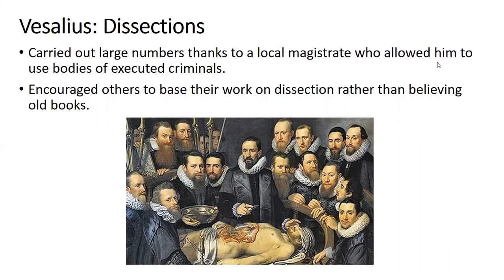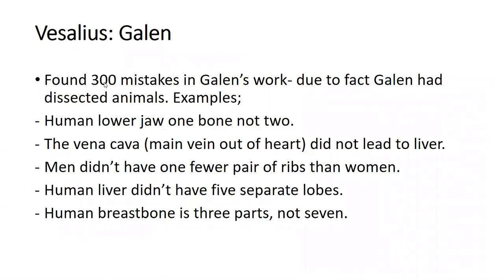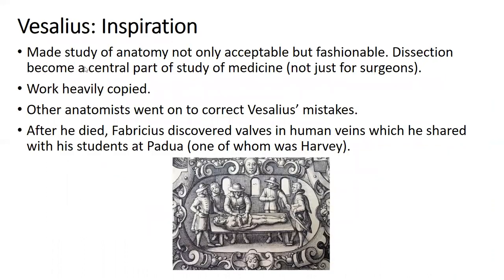To summarise Vesalius: he carried out a large number of dissections thanks to a local judge, and encouraged others to base their work on dissection. His publications included The Fabric of the Human Body and Six Anatomical Tables, and he found 300 mistakes in Galen's work. His work caused a lot of controversy; critics said the human body had changed since Galen's time. Other anatomists later corrected Vesalius's own mistakes — for example, after he died, Fabricus discovered valves in the human veins, which he shared with his students, one of whom was Harvey. Vesalius set the foundations but was not perfect.